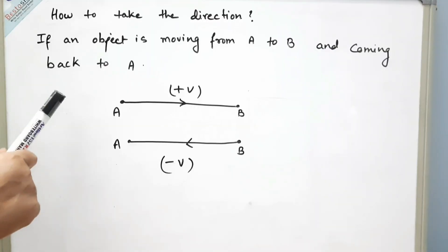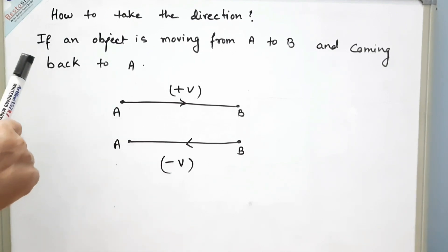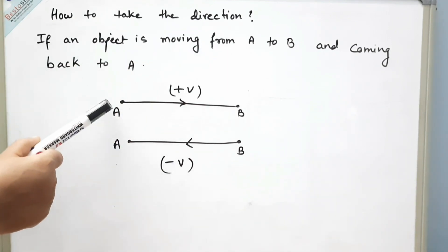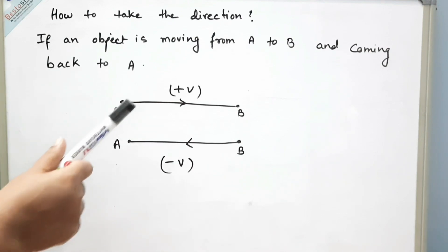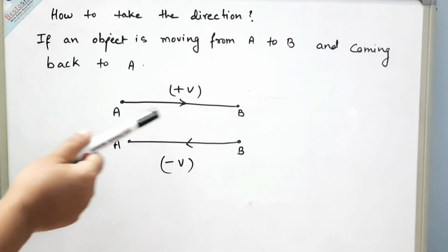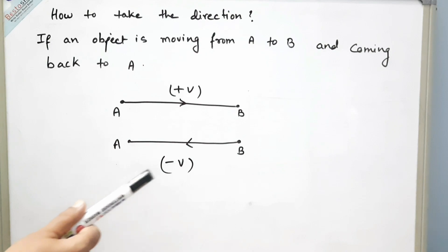To understand direction, we should first understand the concept of origin. If an object is moving from A to B, then A is the origin. When any object is moving away from the origin, its displacement is positive; when the object is moving towards the origin, it is negative. I hope you have got some idea about kinematics. If you have any doubt or question, please do comment.